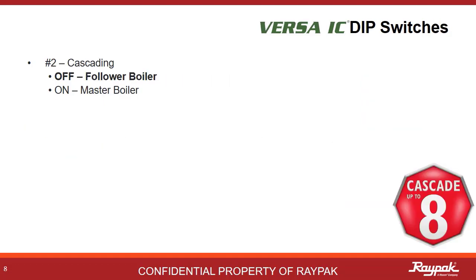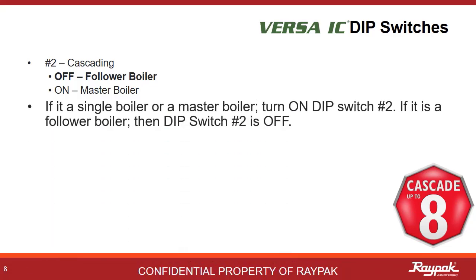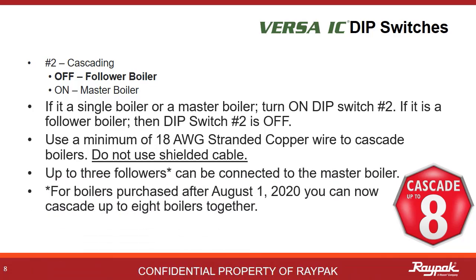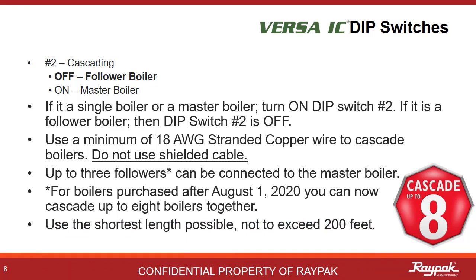Dipswitch number two tells the boiler if it is a master or a follower. When there is only one boiler, it is always a master. In cascade systems, there can be only one master. Always use 18 gauge stranded copper wire for cascade communications. Only use non-shielded cable. You can now connect up to seven followers to the master for an eight boiler cascade. Use the shortest possible run, not to exceed 200 feet.